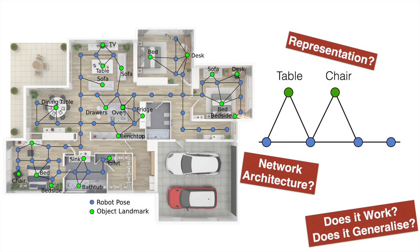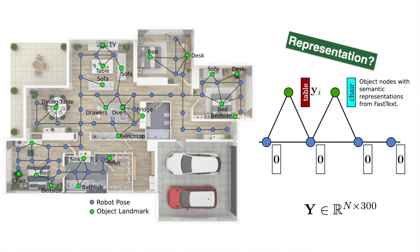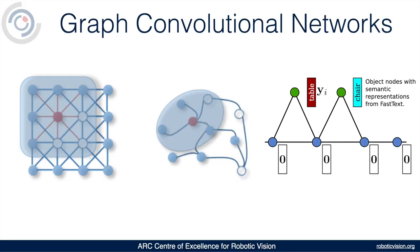To address this problem, we first have to find a suitable representation for the semantic information of object landmarks in our graph, and a suitable network architecture that can digest the graph structure and learn the policy. We propose to use word vector representations trained for text classification, for instance using the fastText model. In our graph map, we represent every object landmark by its word vector representation corresponding to its class name, for instance table or chair. Each of these vectors are 300-dimensional. Graph convolutional networks are a generalization of the convolutional networks you are familiar with. Each graph convolutional layer propagates information between neighboring nodes and thereby updates the representation of each node based on the representation of its neighbors.